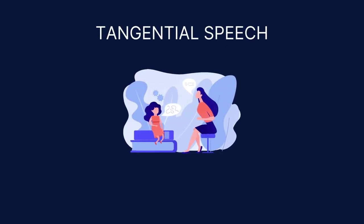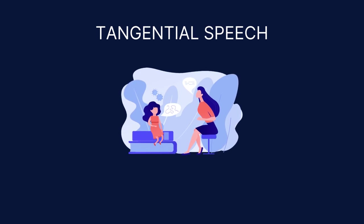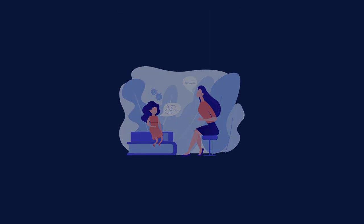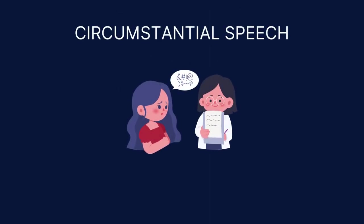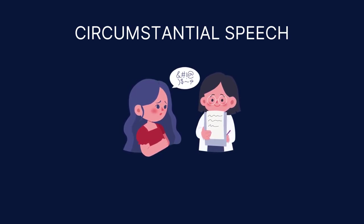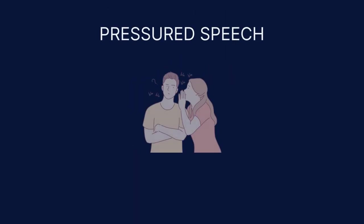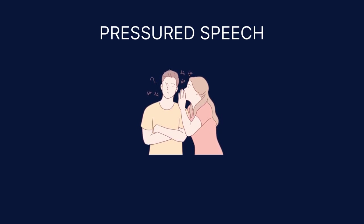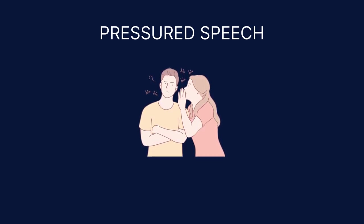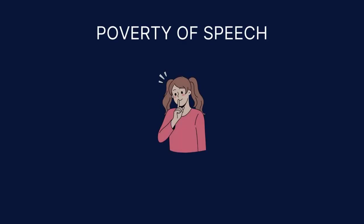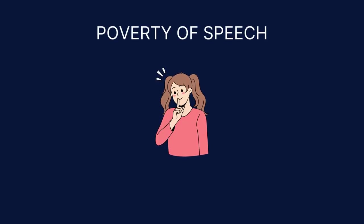Each of these terms represents different ways in which coherence and clarity of speech may be lost. Tangential speech involves responding to questions in an oblique, tangential manner, often veering off topic. Circumstantial speech refers to a style of conversation where the individual includes unnecessary and often irrelevant details. Pressured speech is rapid and frenzied, commonly observed in manic episodes. Poverty of speech denotes limited and often monotonous speech, usually associated with depression or schizophrenia.